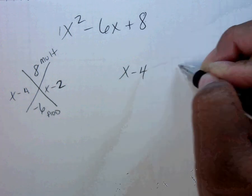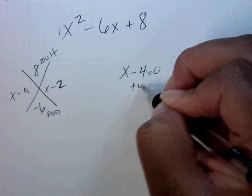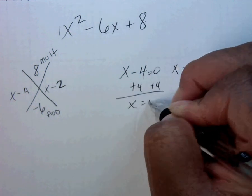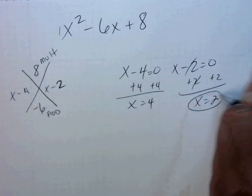So we take these two and we set them equal to 0 to find our roots. Plus 4 plus 4. Plus 2 plus 2. And I have my roots.